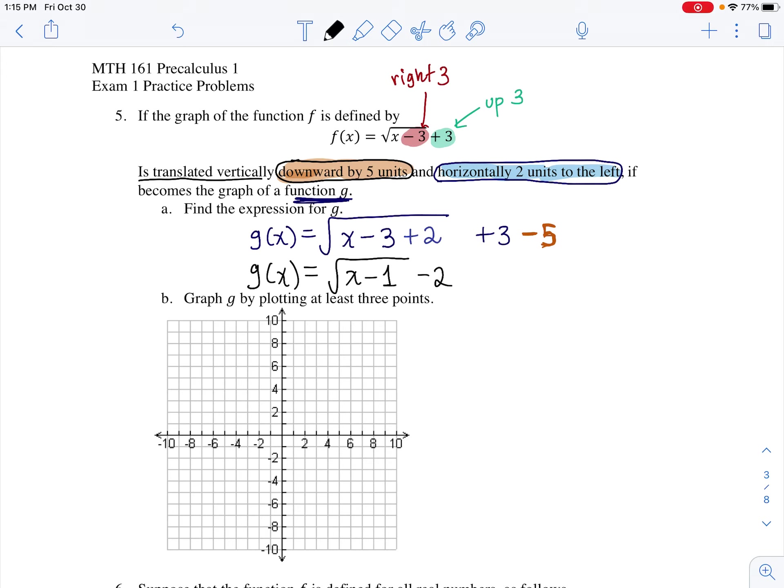Now we're going to go ahead and graph this by plotting at least three points. The first point for me, I know that this graph will start down two, and then the minus one inside is going to move the graph right one. So let me go ahead and plot that first starting point of this square root function graph, down two and right one. Here is where this function is going to start.